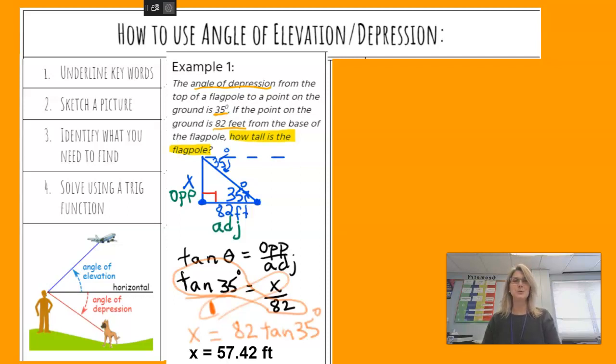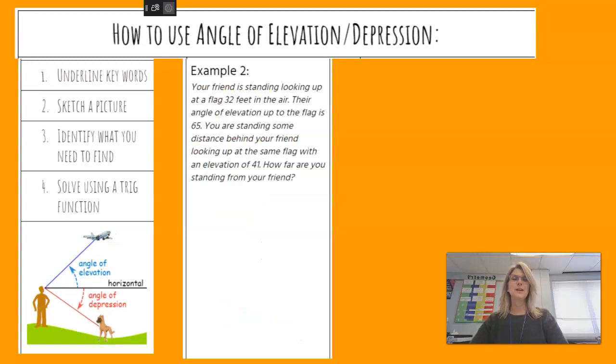Let's move on to example two. Your friend is standing looking up at a flagpole 32 feet in the air. Their angle of elevation up to the flag is 65 degrees. You're standing some distance behind your friend looking up at the same flag with an angle of elevation of 41 degrees.